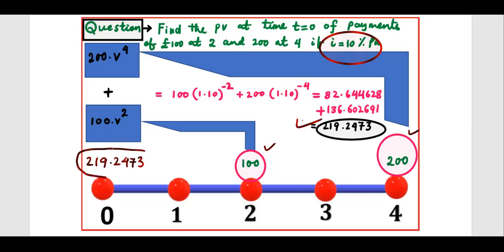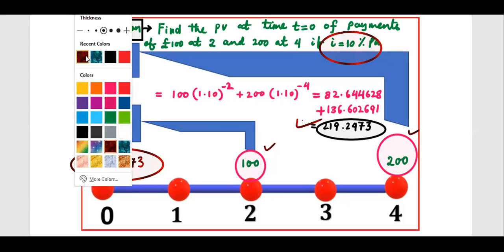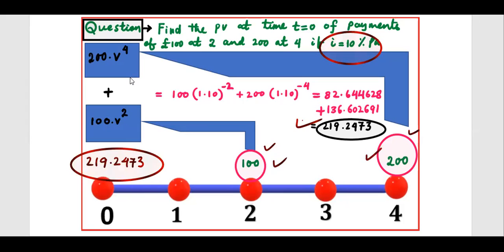If you deposit this much amount now, you will be able to receive 100 after 2 years and 200 after 4 years. Suppose you are studying in a college — it is a 4-year course — and you want to deposit 100 after 2 years and 200 after 4 years. Then you need to keep 219.2473 in the bank now. It is not 300. To find it, find the discounted value of 100 for 2 years and the discounted value of 200 for 4 years. You will get the answer, of course you need the interest rate.